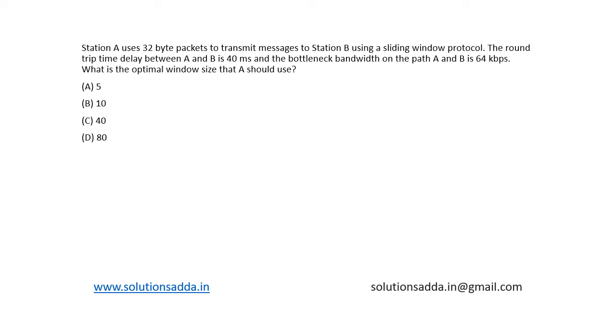This is a question from Computer Networks. Station A uses 32-byte packets to transmit a message to Station B using sliding window protocol. The round-trip delay time between A and B is 40 milliseconds, and the bottleneck bandwidth on the path A and B is 64 kilobits per second. What is the optimal window size that A should use?